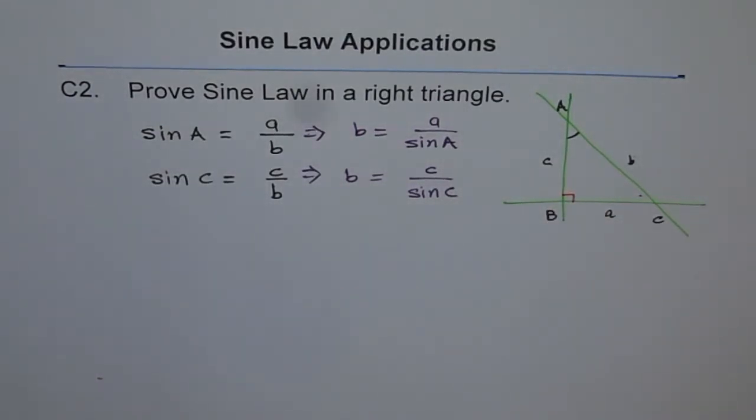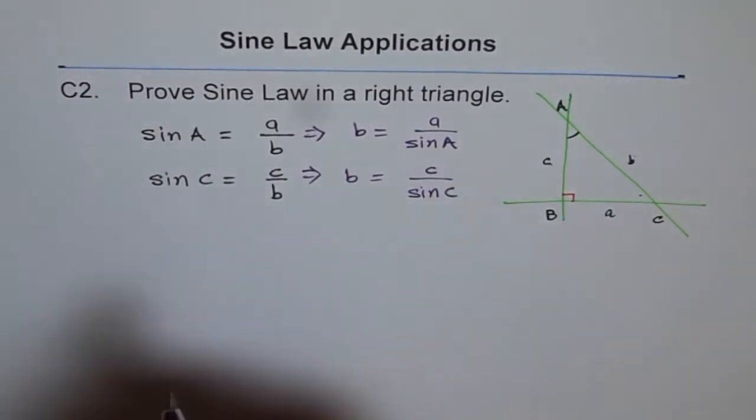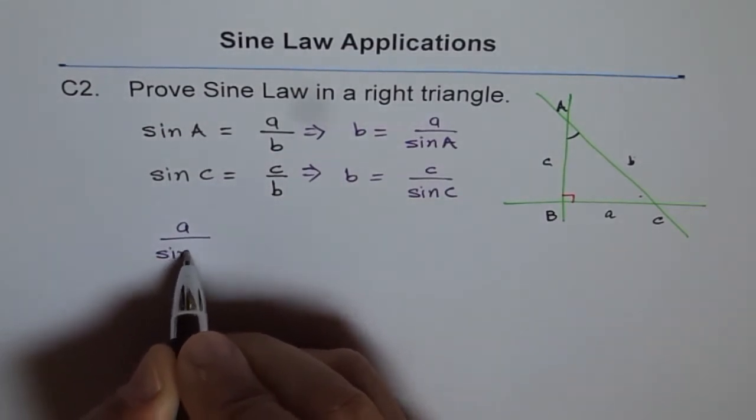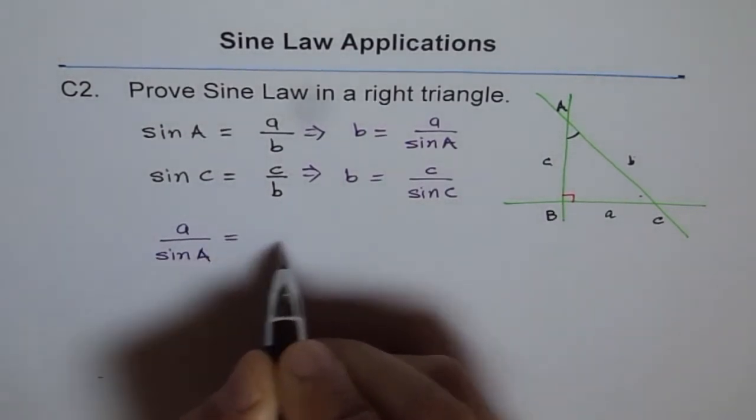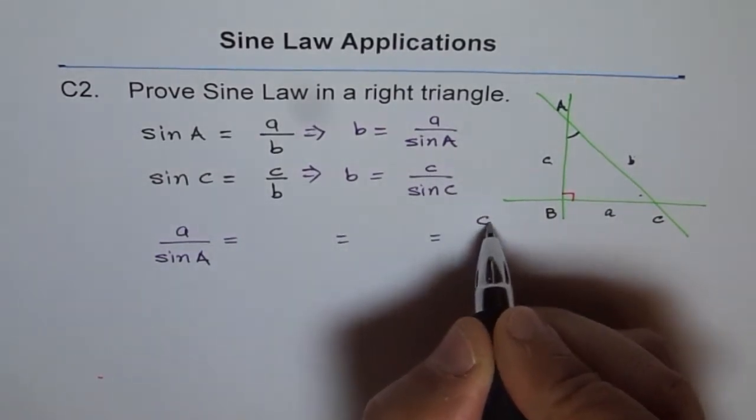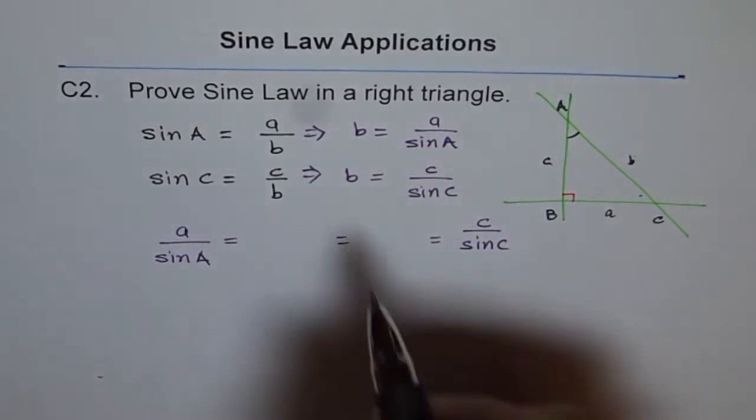The only thing missing here is b itself. That's critical, so we'll write at least the two parts which we have got: a over sin A is equal to—I'll leave the space for b—is equals to c over sin C. And b and both are equal to b's, that means both are equal to b.